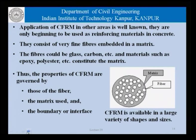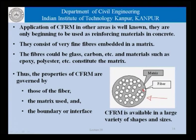This picture shows a very simplified example of CFRM, or continuous fiber reinforced material. What we have is small fibers embedded in a matrix, and depending on what the fiber is, what the matrix is, and what the amount of fiber is, we have different properties that can be used to our advantage. The CFRM consists of very fine fibers embedded in a matrix; the fibers could be glass or carbon, and materials such as epoxy, polyesters and others constitute the matrix.